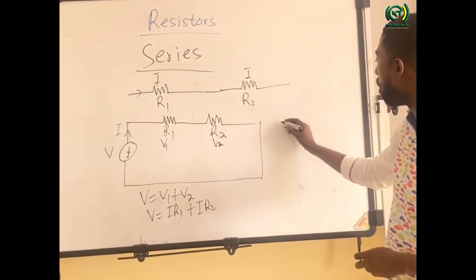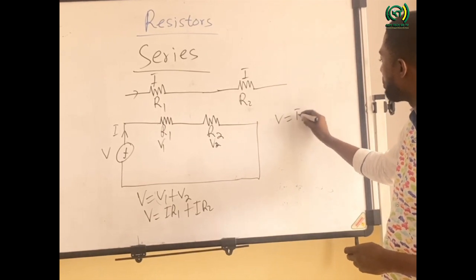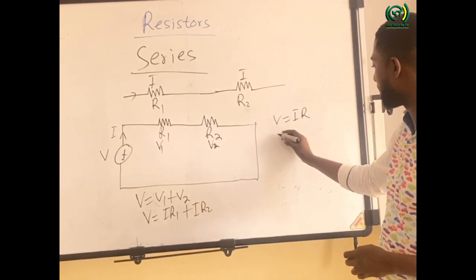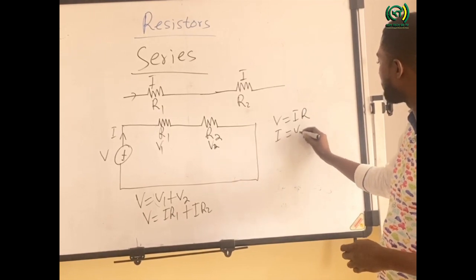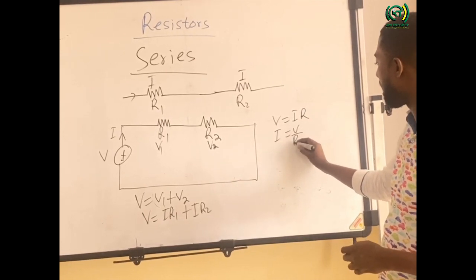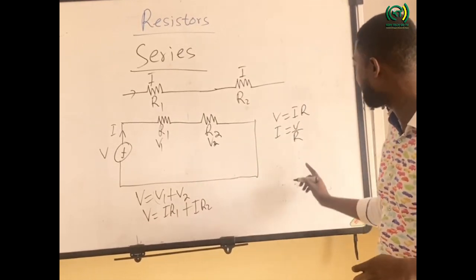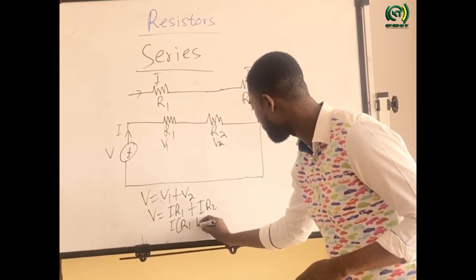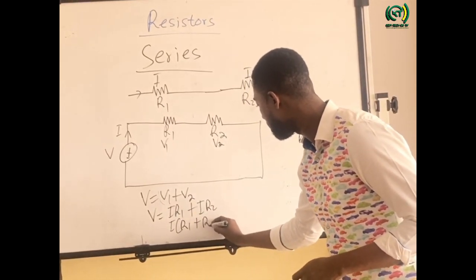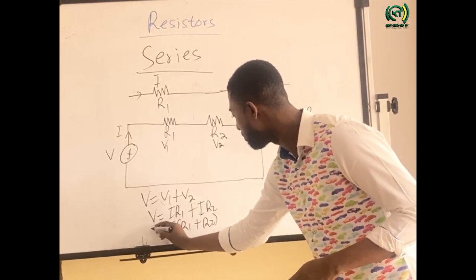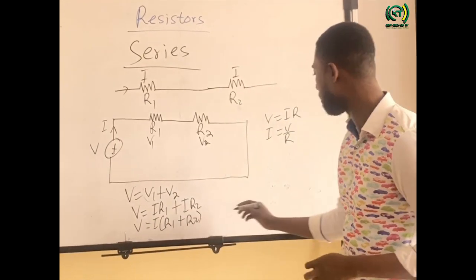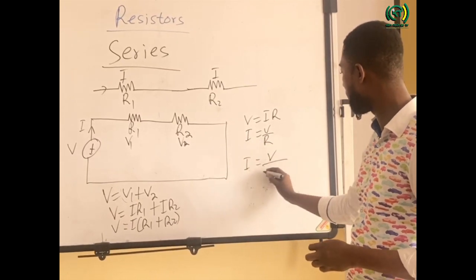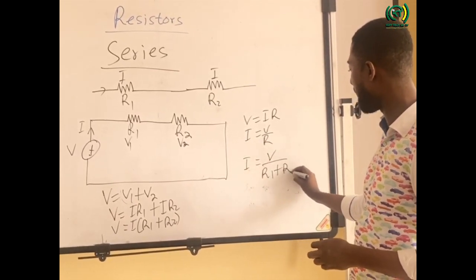Remember Ohm's law: V is equal to I times R. So if I want to calculate the current, current is equal to voltage over R. Here I can factor I out: I times R1 plus R2 equals V. So if I want to calculate for I, it would be V over R1 plus R2.